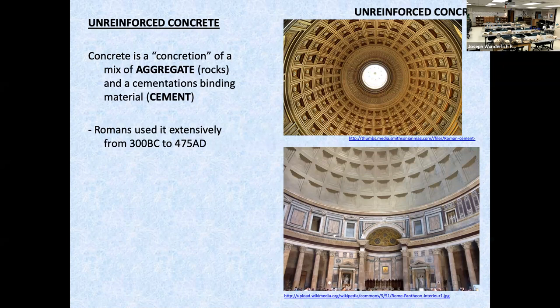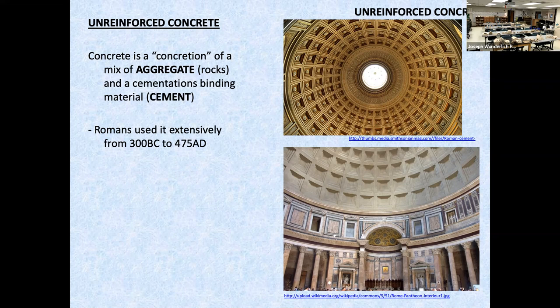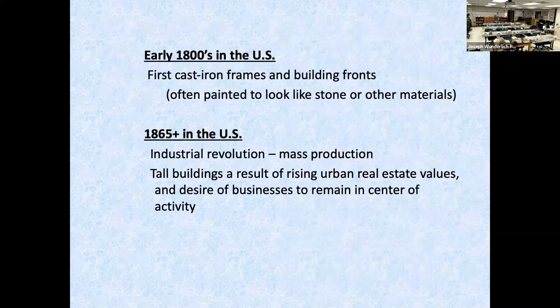The Romans used concrete extensively — this is the Pantheon in Rome. Concrete is a concretion, a mix of aggregate — essentially rocks and sand of different sizes — and a cementitious binding material: cement, typically Portland cement. Named after Portland stone in Britain several hundred years ago because it looked like it — it's not from Portland.